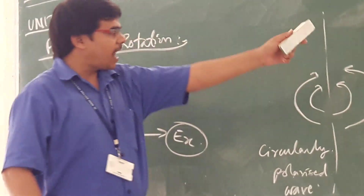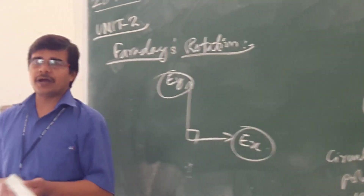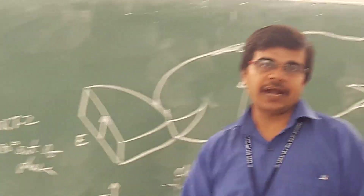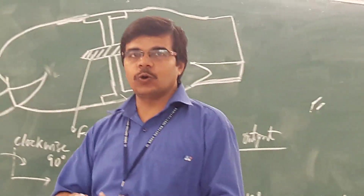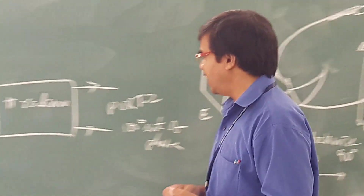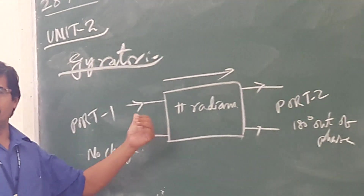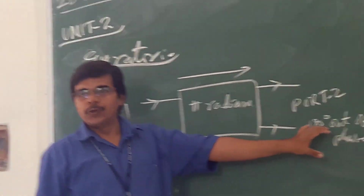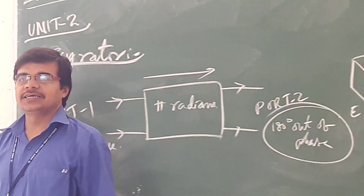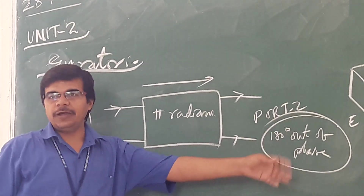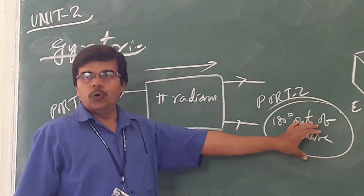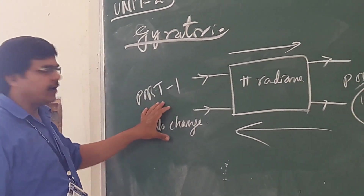This is the basic principle on which some of the microwave components work. Based on the ferrite rod rotation principle, one such component is the gyrator. The gyrator is a two-port device with port 1 and port 2. When moving from port 1 to port 2, the output will be 180 degrees out of phase compared to your input. When we give input at port 2, we get no change at port 1.